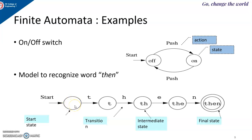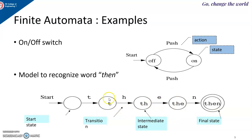To see the model to recognize the keyword 'then': we can draw it using a state transition diagram. The start state has nothing been read. Once I read the alphabet T, I go to state T. If the next symbol is H, the state changes from T to TH. From TH, if I receive input E, the state changes to THE. In the state THE, if I receive N, I go to the state 'then'. The first state is marked with the start symbol, and the last state 'then' is drawn with two circles indicating it is a final state.